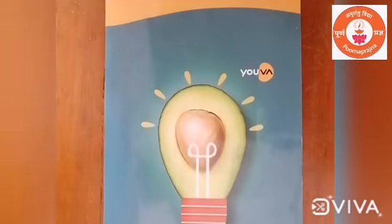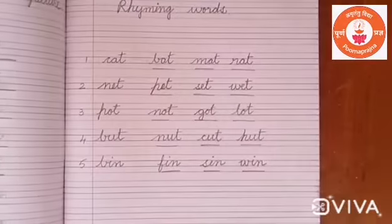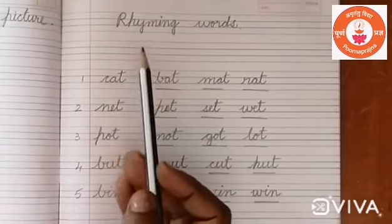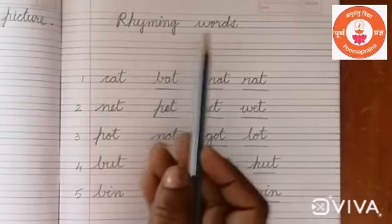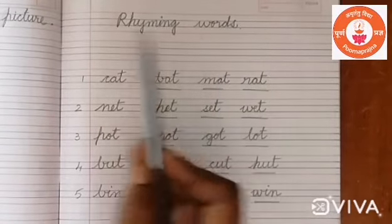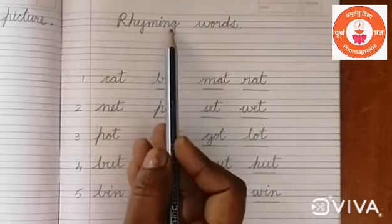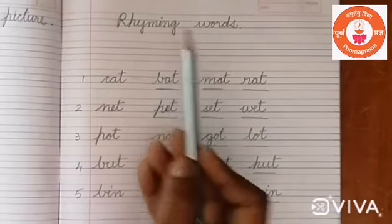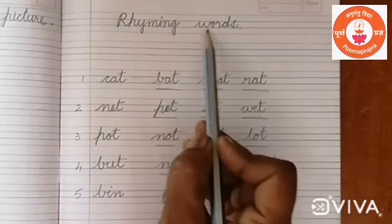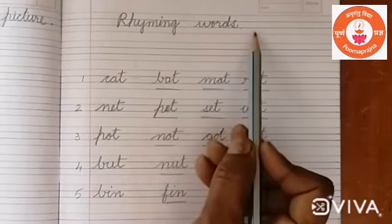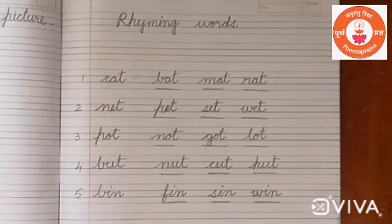Now take out your four-line notebook. Write the heading: rhyming words — R, H, Y, M, I, N, G — rhyming, W, O, R, D, S — words. Rhyming words. Okay?